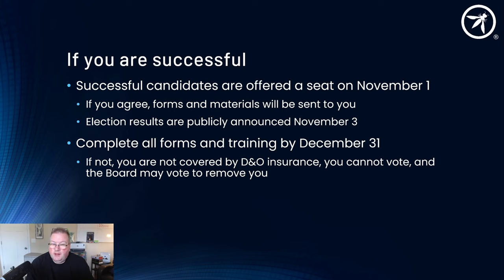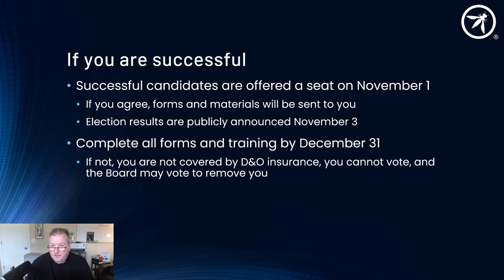It's really important to keep on top of your emails around this November deadline. You must complete all forms and training by December 31st. We will be sending you some books, and there is BoardSource training, which is online training material. We require you to complete all of that so that you can take your seat. If you don't complete the disclosure forms, the commitment agreement, the online training, and acknowledge receipt of the books, you may not be able to take your seat. You won't be able to vote, and you won't be covered by directors and officers insurance, which is a critical thing. The board may vote to remove you at the first board meeting. It's really important that you do everything by December 31st, otherwise you may not be able to take your seat and all of that campaigning will have gone to naught.